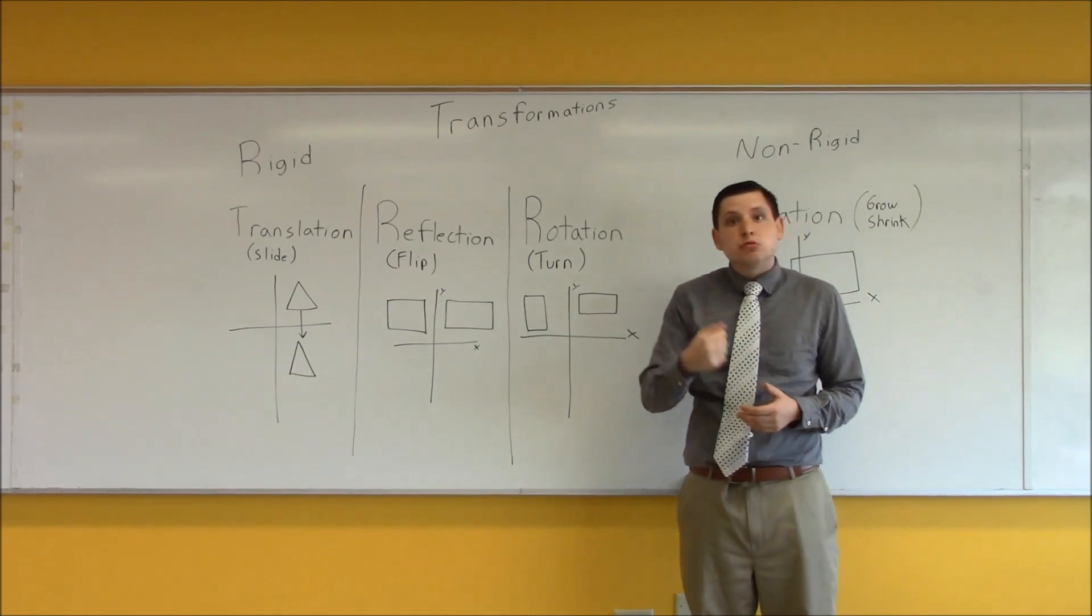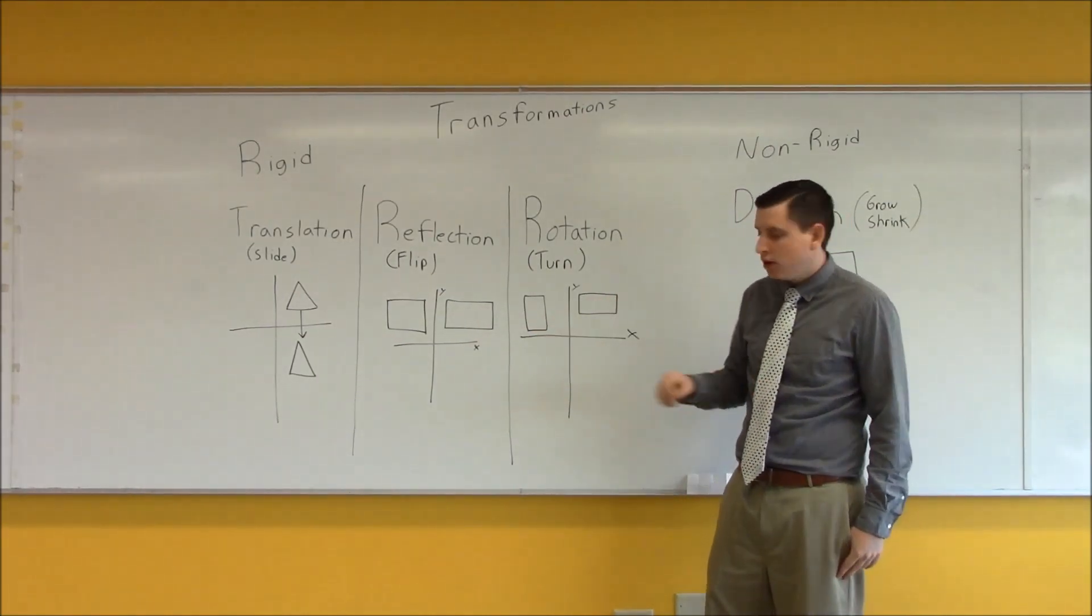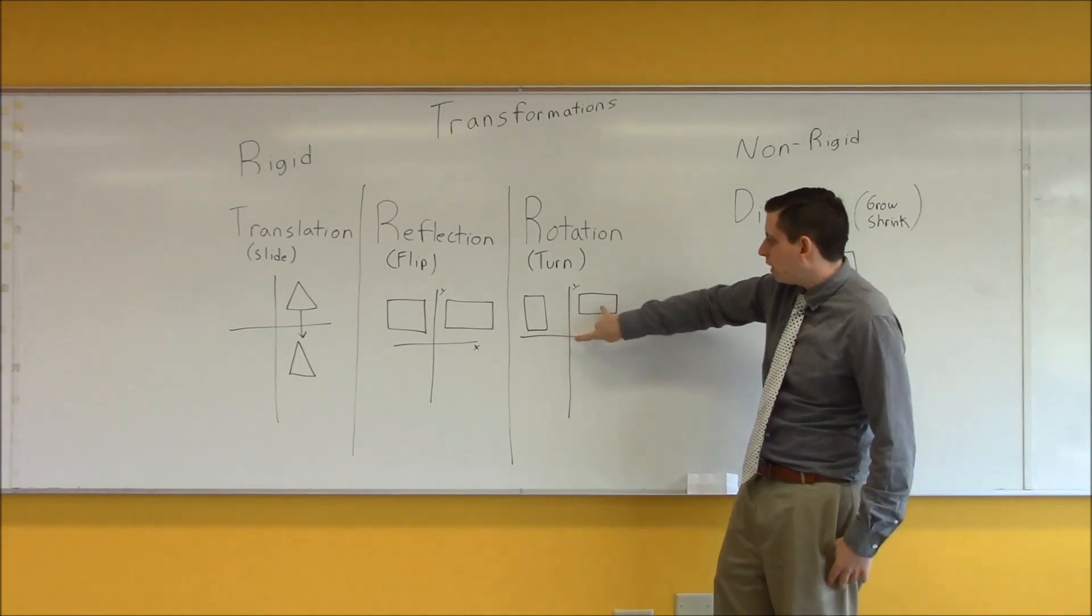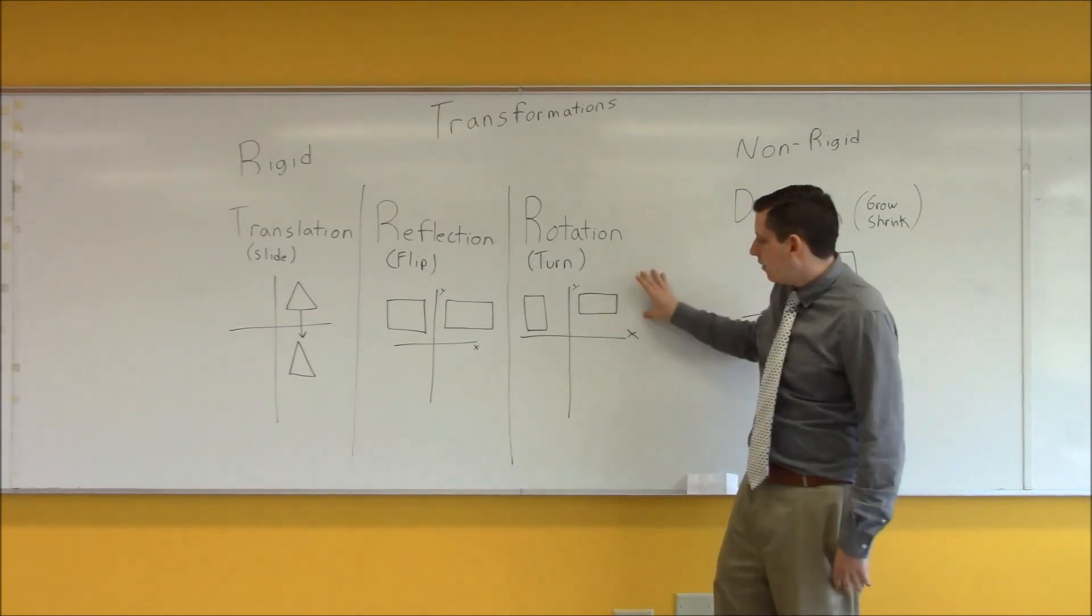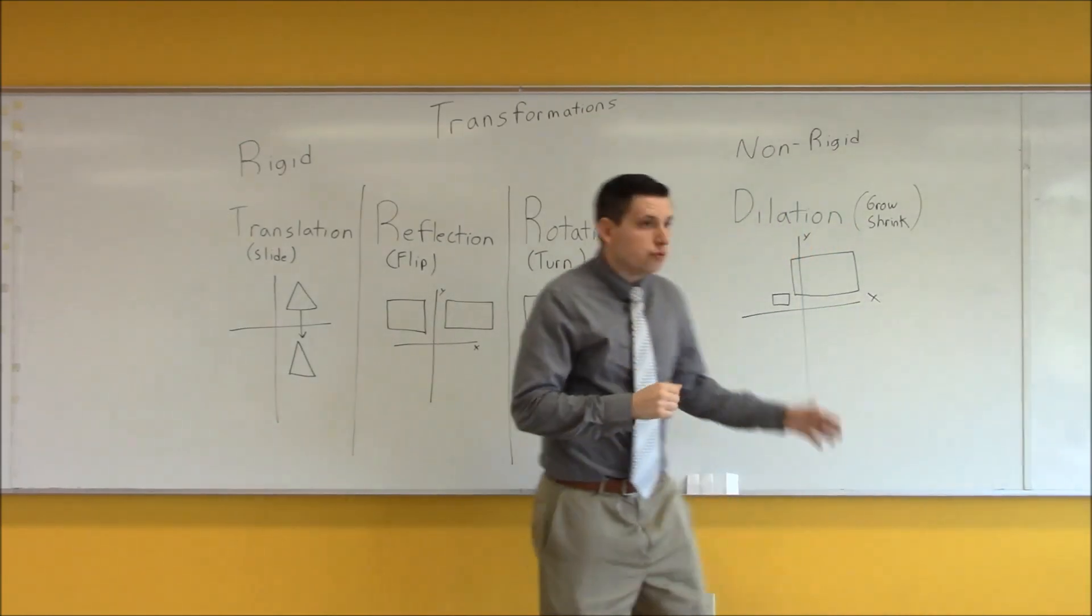The third and final type of rigid transformation is rotation, which is the turning of a figure. And when you're turning a figure, you're turning it about a certain point. In this example, it was the origin that we had turned it around.